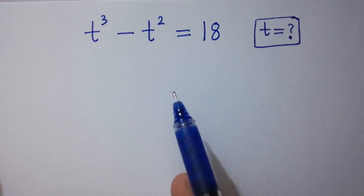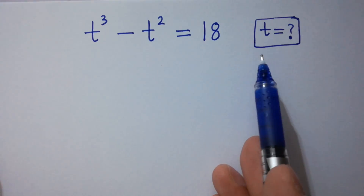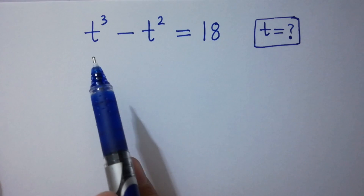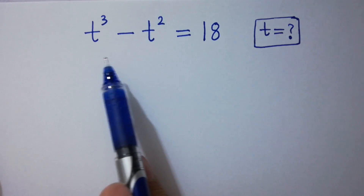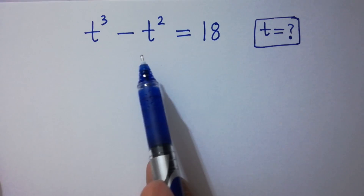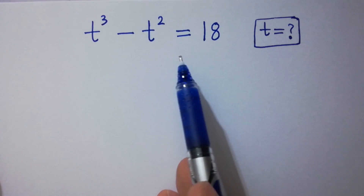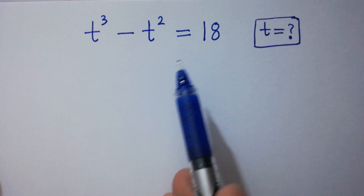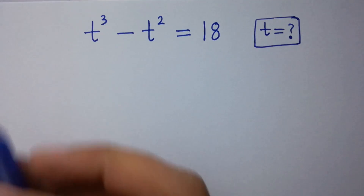Hello friends, find the value of t if t cube minus t square equal to 18. Let's have a solution.